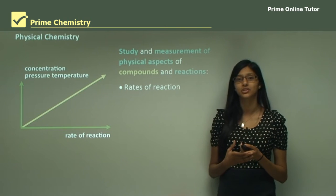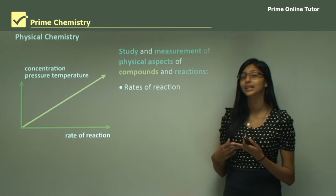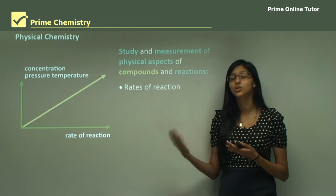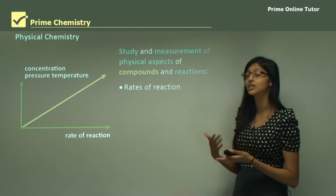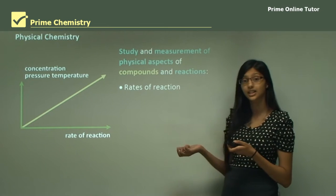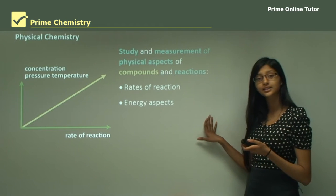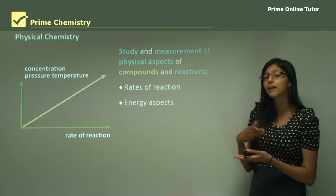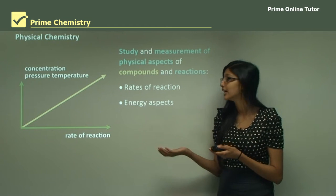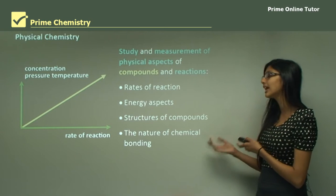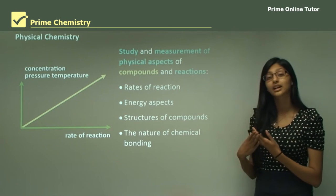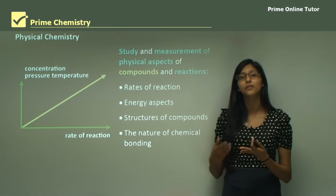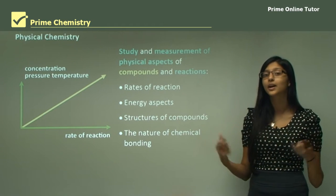Physical chemistry studies and measures the physical aspects of a compound and reaction. This can include rates of reaction — is the reaction proceeding too fast or too slow, and do we need a different catalyst to make it more efficient? They also look at energy aspects: can we use the same energy to make the reaction go faster, or use less energy and still produce the same amount of product? They also look at the structure of compounds and the nature of chemical bonding, since the nature of bonding determines the energy aspects of a reaction. For example, covalent bonding requires much more energy to break bonds compared to ionic bonding.